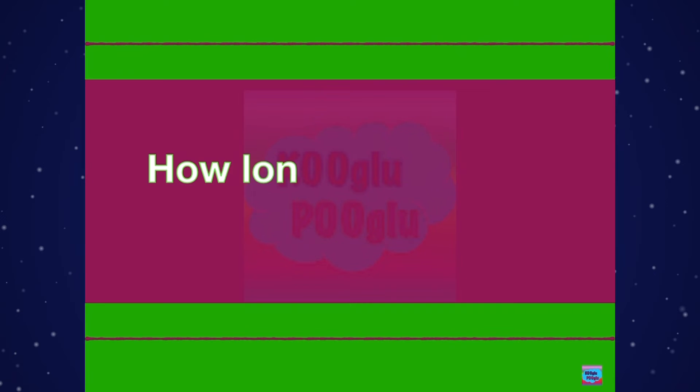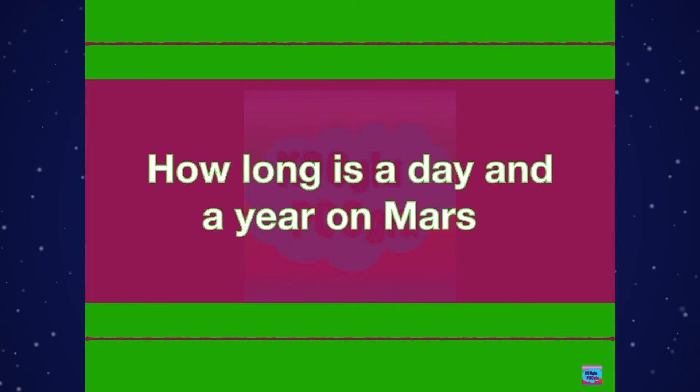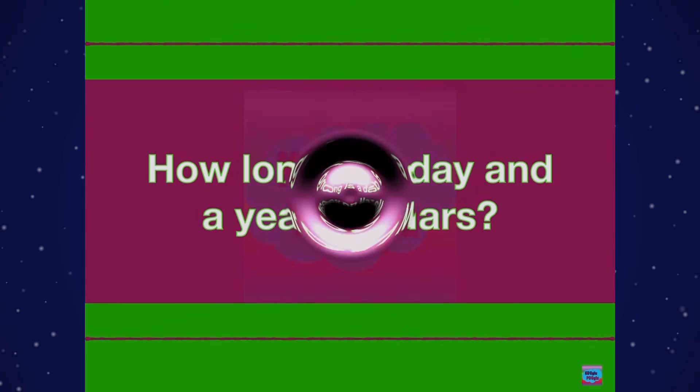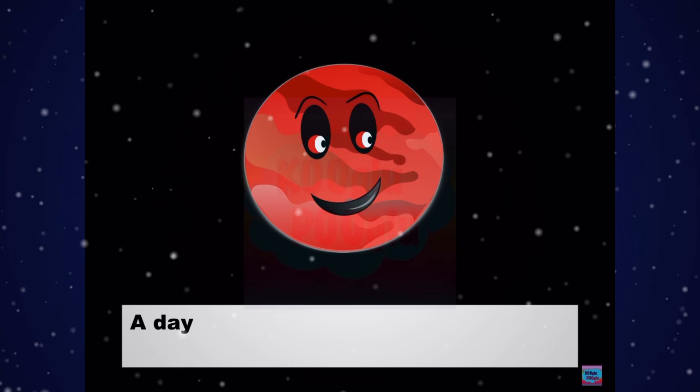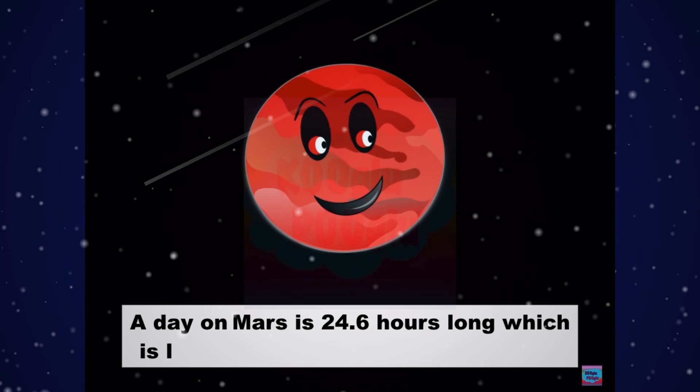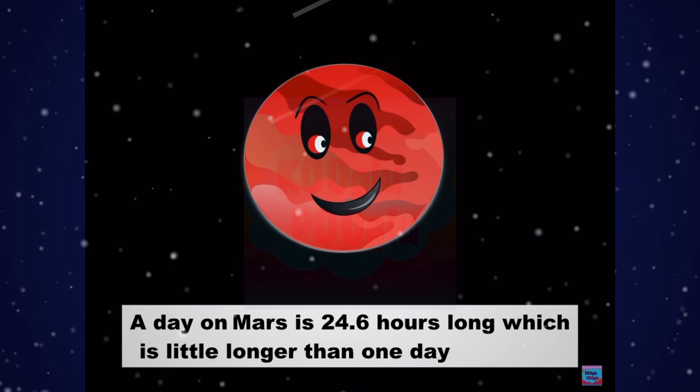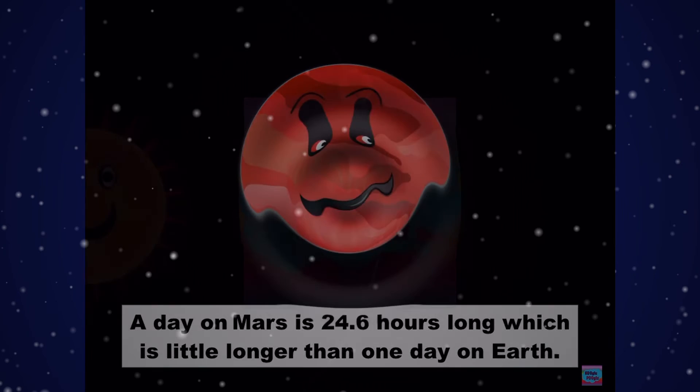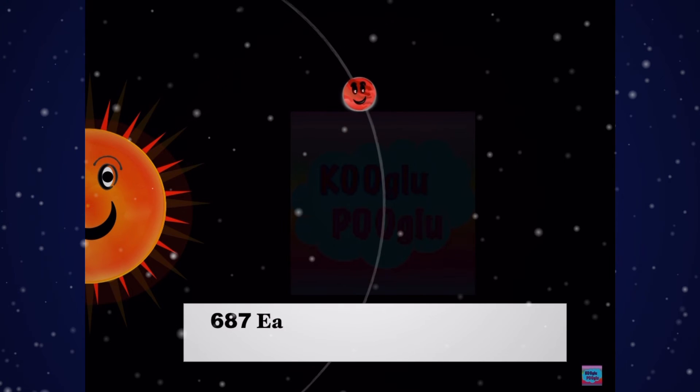How long is a day and a year on Mars? A day on Mars is 24.6 hours long, which is a little longer than one day on planet Earth. It takes 687 Earth days to make one year on Mars.